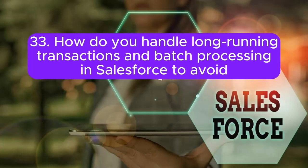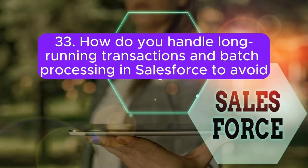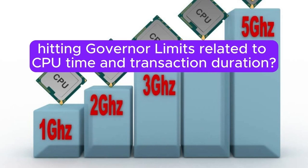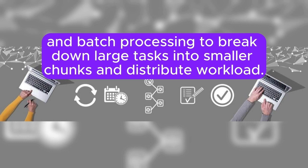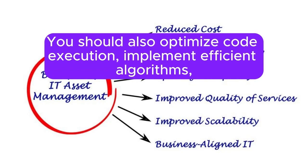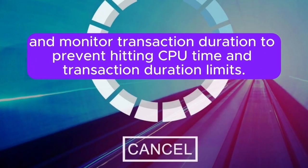Question 33: How do you handle long-running transactions and batch processing in Salesforce to avoid hitting governor limits related to CPU time and transaction duration? Answer: To handle long-running transactions and batch processing, you can use techniques such as asynchronous processing, parallel processing, and batch processing to break down large tasks into smaller chunks and distribute workload. You should also optimize code execution, implement efficient algorithms, and monitor transaction duration to prevent hitting CPU time and transaction duration limits.